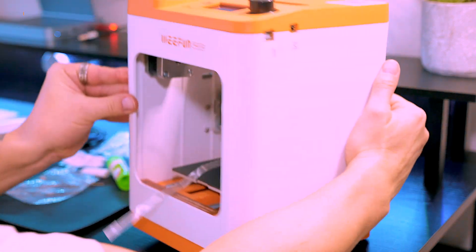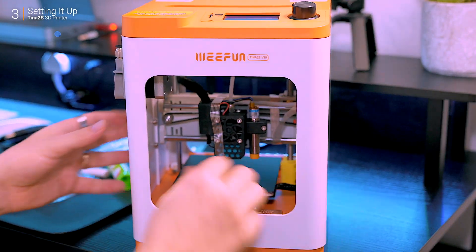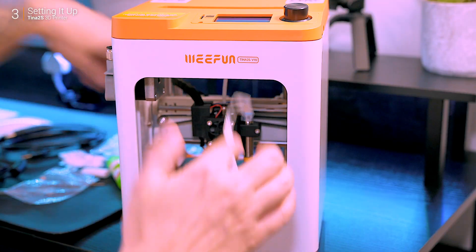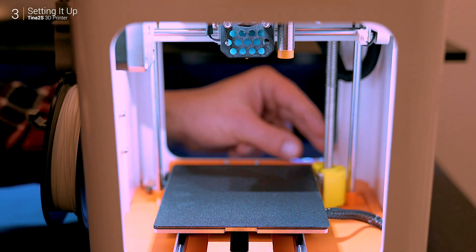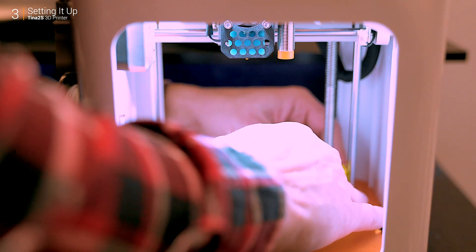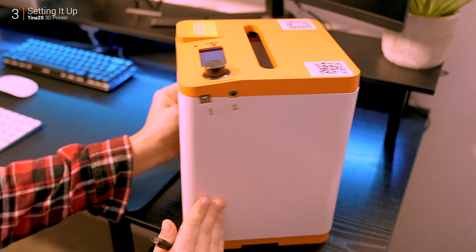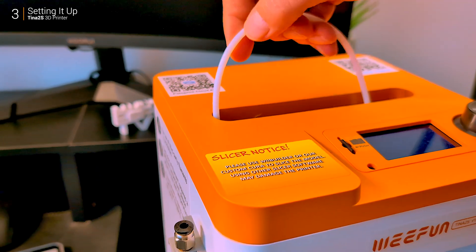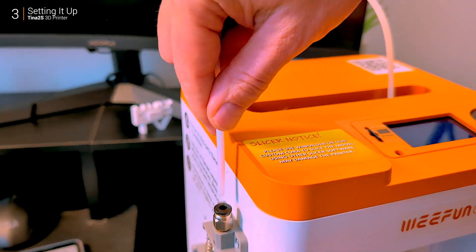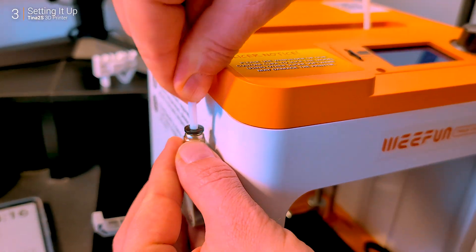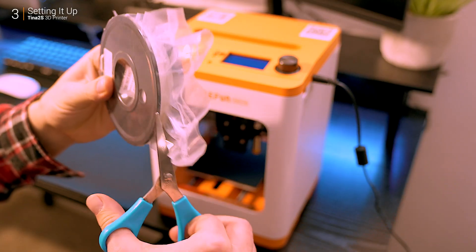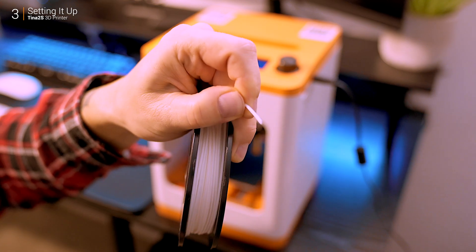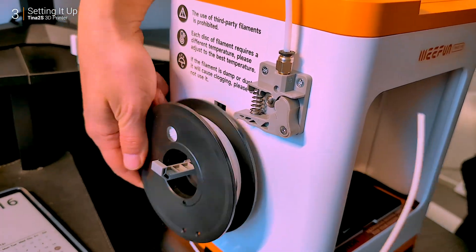Setting up this 3D printer is as simple as it gets, which is a big win for beginners. Start by removing all the protective tape—don't miss the ones on the nozzle, lead screw, and the plastic coupling. Attention to detail here saves headaches later. Next, plug it in, attach the filament tube to the extruder, and load the spool. Here's a pro tip: cut the filament at a sharp angle before feeding it. It makes the process smoother and avoids unnecessary jams.